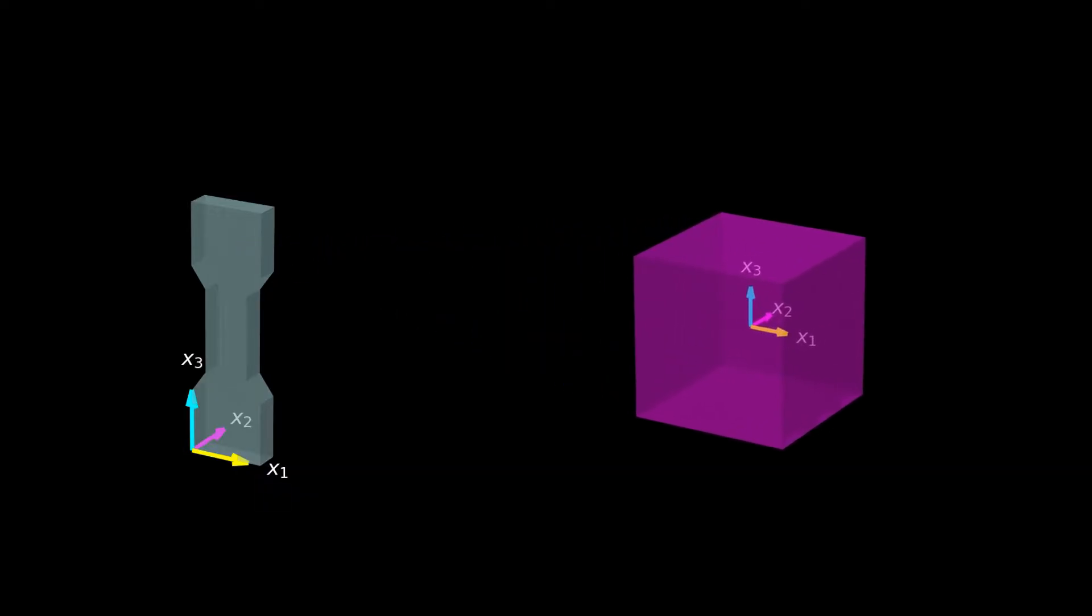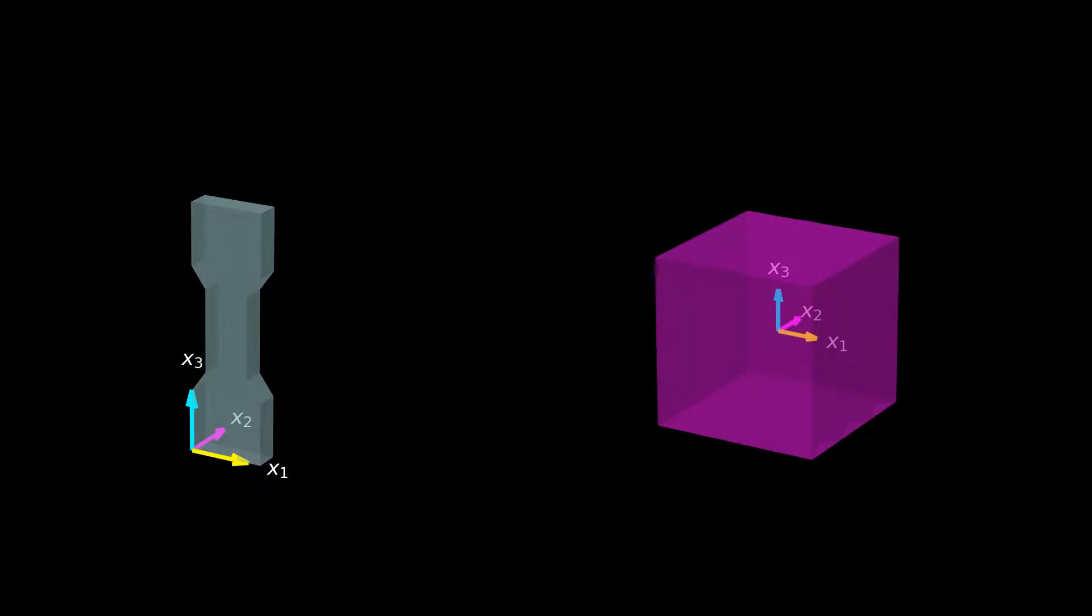To illustrate strain at a single point in the continuum, we cut out a tiny volume element at this point. This volume element is so tiny that we call it an infinitesimal element. In fact, let's assume here that the infinitesimal element is so small that the strain is constant over the element.